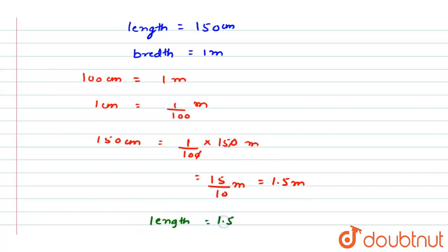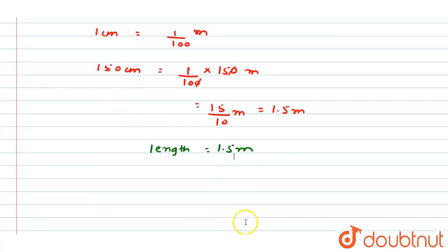Instead of 1.5 meter and breadth is 1 meter, so as we all know that the perimeter of the rectangle is 2 into L plus B.